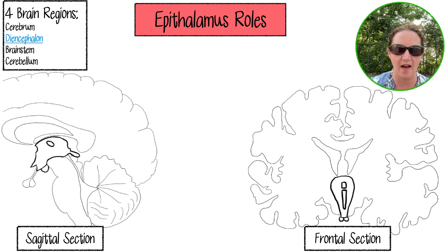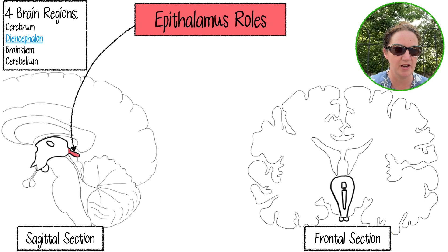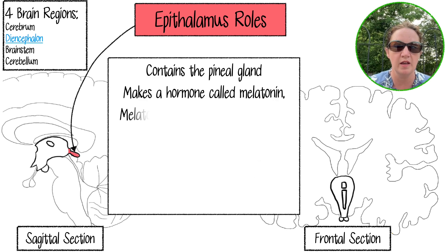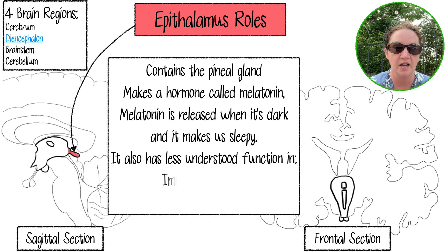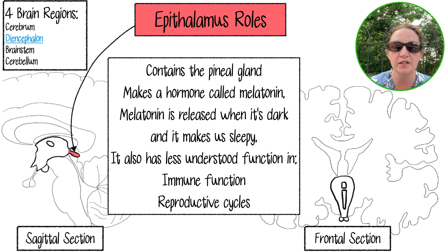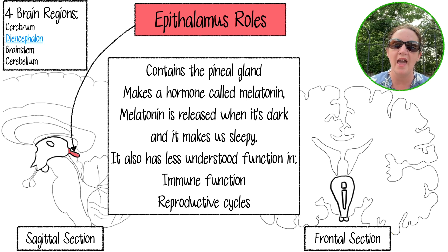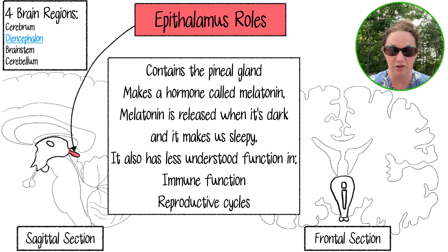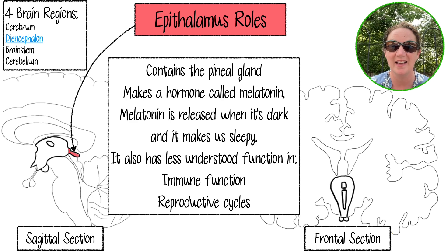Last, we'll talk about the epithalamus, which is only visible in the sagittal section. The epithalamus is mostly known for containing the pineal gland, which makes a hormone called melatonin. Melatonin is released when it's dark outside — that's why you hear not to watch computer screens near bedtime. Melatonin makes us sleepy; people might take it to avoid jet lag, but your body's pineal gland normally produces it when it's dark. It's sometimes called your 'third eye' because it's sensitive to light — when light goes down, melatonin production goes up.